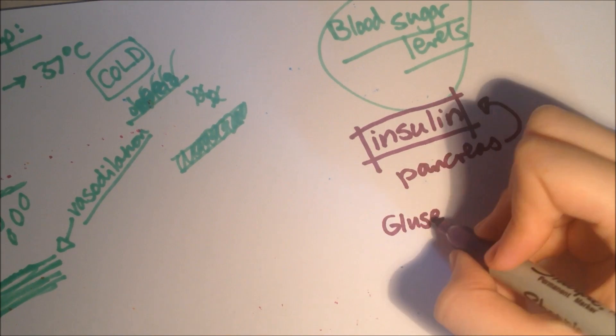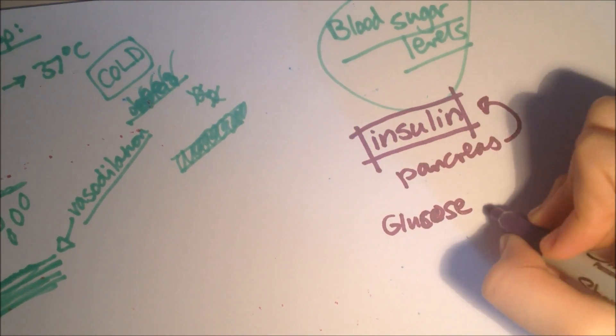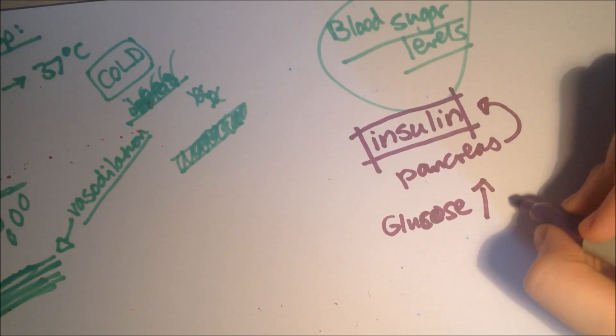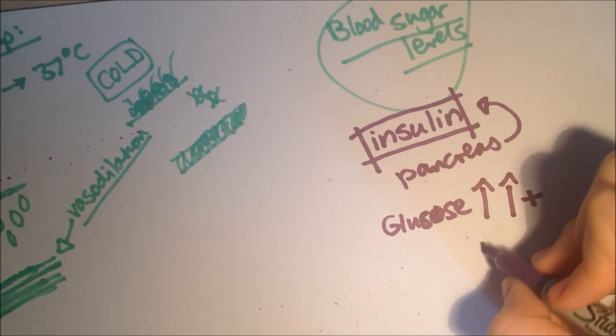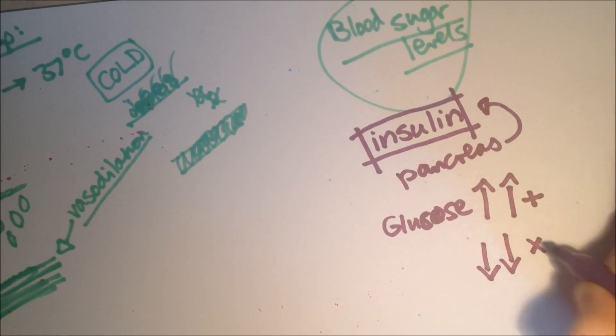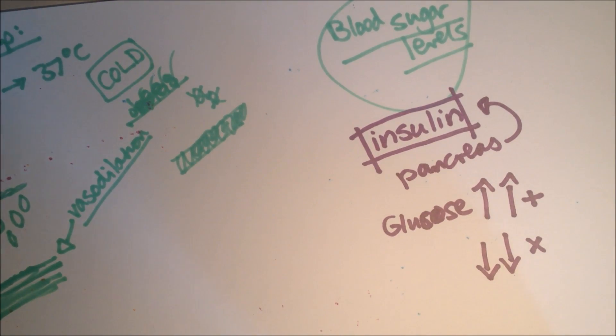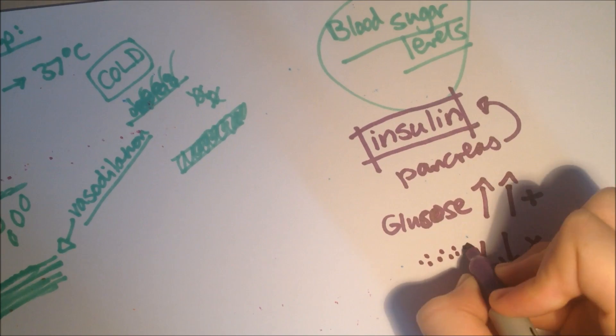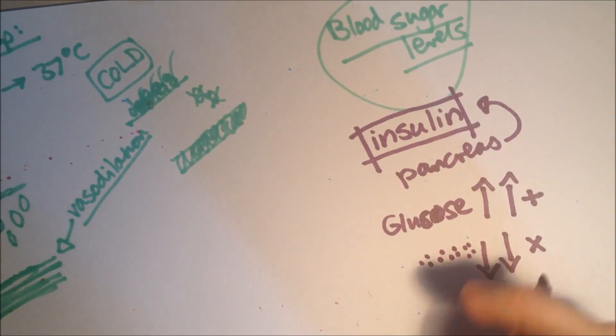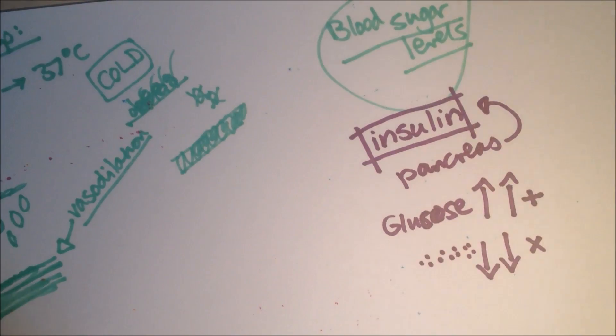So, if the glucose level in the blood, glucose, level is too high, then, insulin is added. But, if it's too low, insulin is not added. Insulin is a hormone. And, hormones travel in the blood, so it can take quite a while, for them to get where they're needed. So, electrical impulses, are sent along the nerves, to travel much faster.